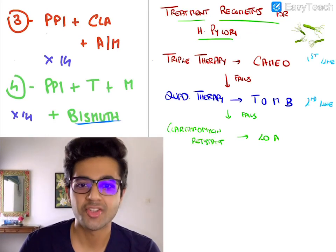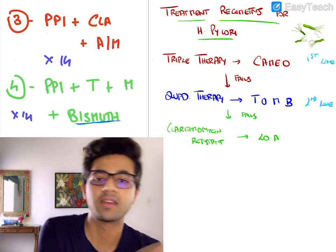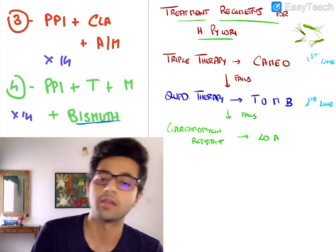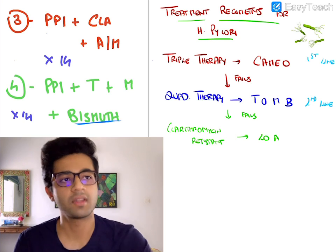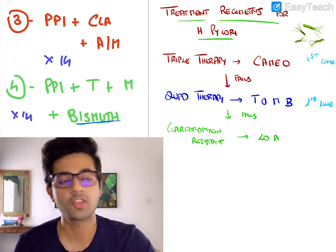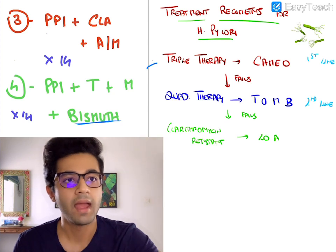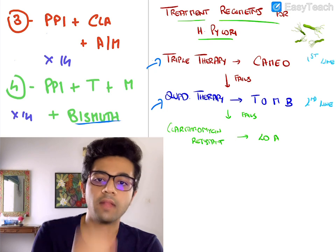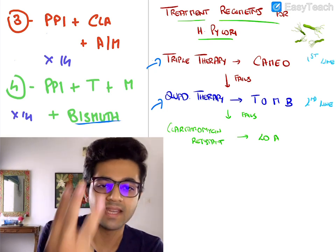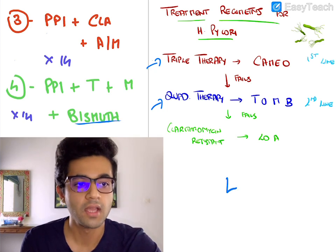Hi guys, so in this short video, I'm going to try and talk about the treatment regimens used for the treatment or eradication of an H. pylori infection — that's nothing but a Helicobacter pylori infection. The popular regimens include a triple therapy regimen and a quadruple therapy regimen. The triple therapy consists of three drugs and the quadruple therapy consists of four drugs, both given for a period of 14 days.